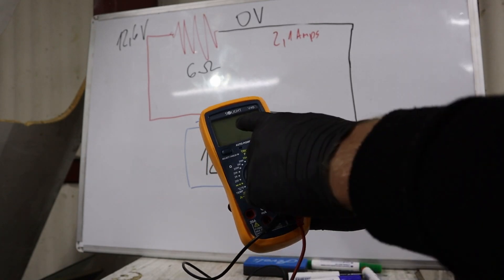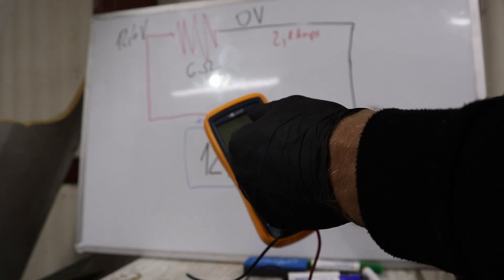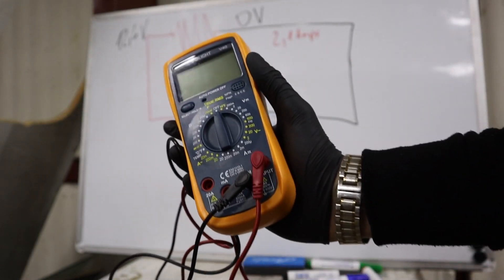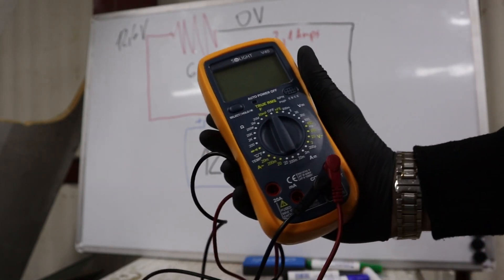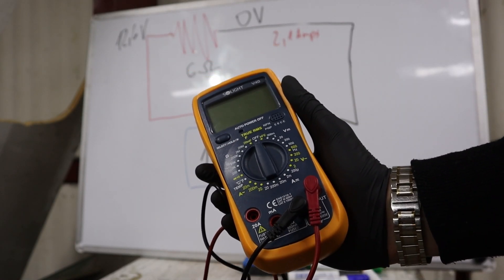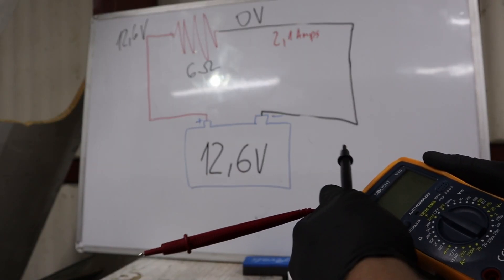Now I want to show you how you can measure voltage with a multimeter and how that works. You've probably already seen a multimeter. This is a digital multimeter. You can measure voltage, resistance, and current. You have two leads, positive and negative.